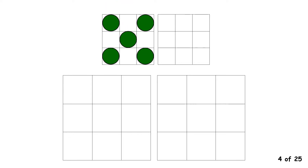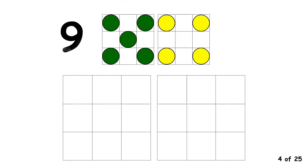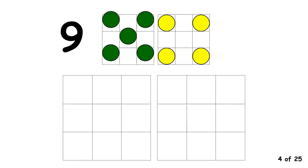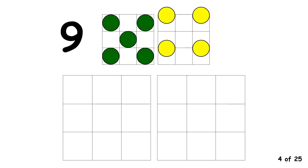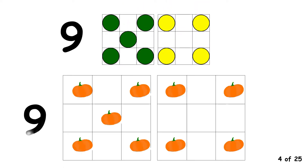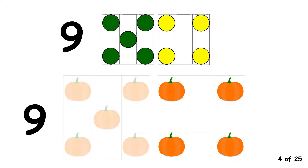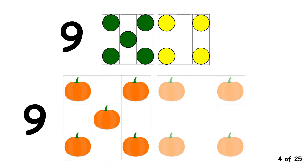5, 6, 7, 8, 9. 9 is made with 5 and 4. 9 is made with 5 and 4.